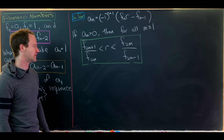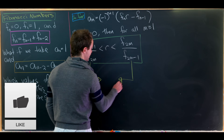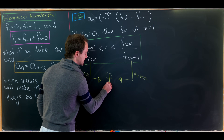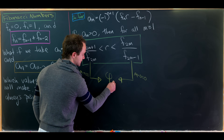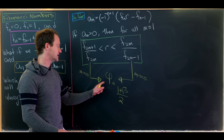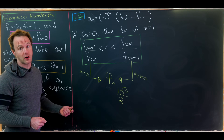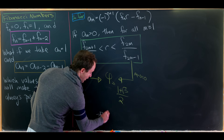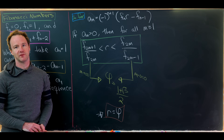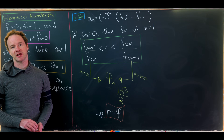Now we finish with a well-known fact: as m tends to infinity, ratios of consecutive Fibonacci numbers converge to the golden ratio φ = (1 + √5) / 2. Since both sides of our inequality limit to φ, and r must satisfy this inequality for all values of m, the only value of r that works is the golden ratio φ. There should be a related video on Fibonacci identities on screen now if you'd like to check it out.